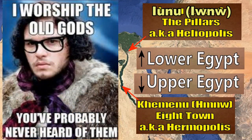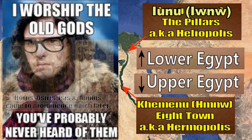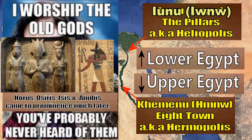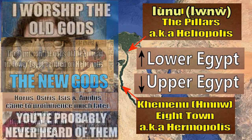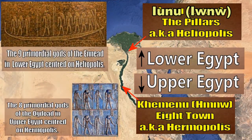We need to bring up the point of the old gods as opposed to the new gods. There is a tendency to focus on Isis, Osiris, and Horus and the particular story connected to them. However, Horus, Isis, Osiris, and Anubis came to prominence in a later period of Egyptian history. The old gods are different from these new gods — Horus, Isis, Osiris, and Anubis are new gods in this very long history of Egypt.